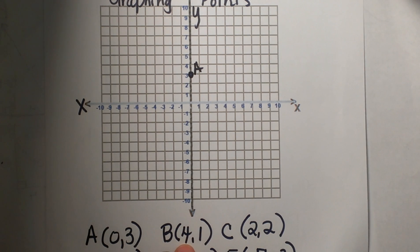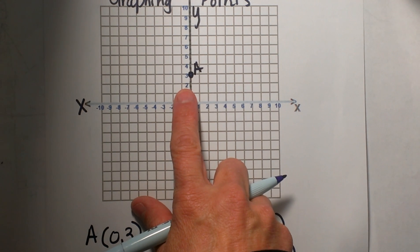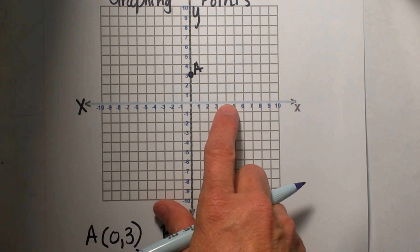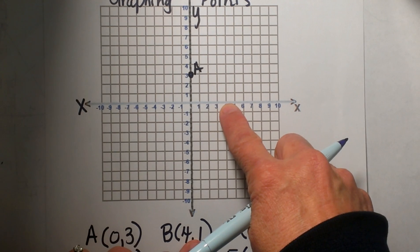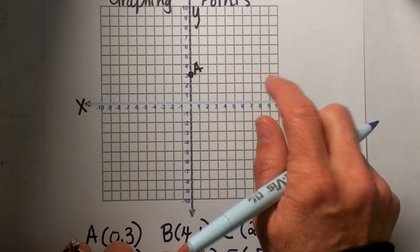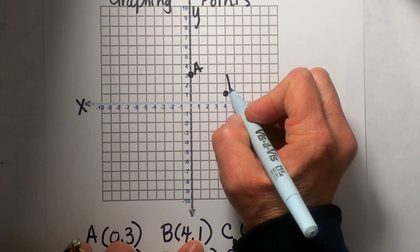Now let's look at the point (4,1). For (4,1) I am going to start at the origin and I am going to move positive 4 to the right because that is my x direction, and then I am going to move a positive 1 in the y direction so I am going to go up and that is going to be point B.